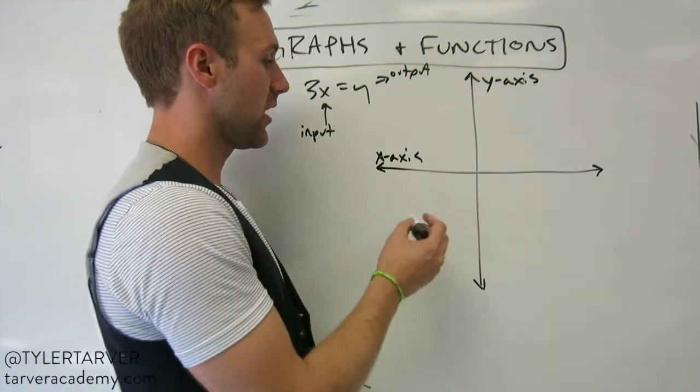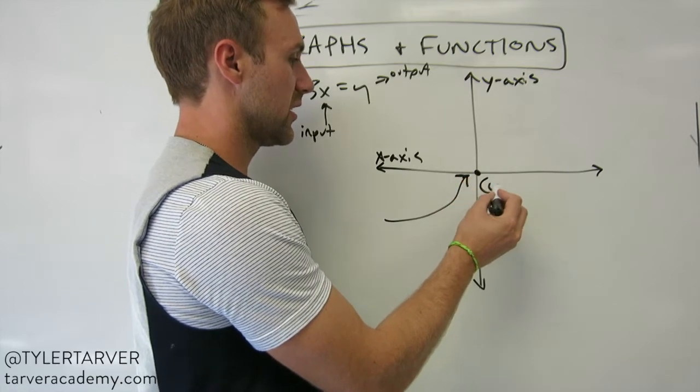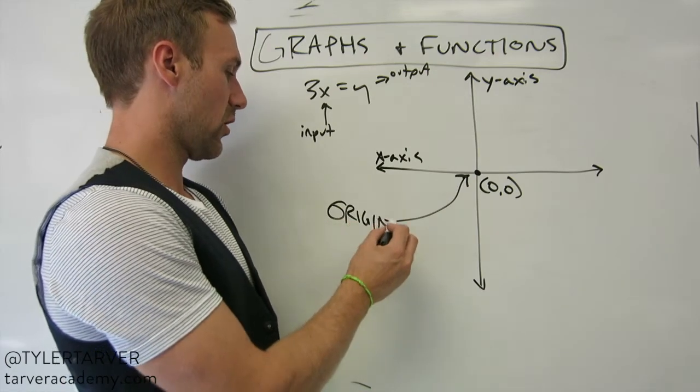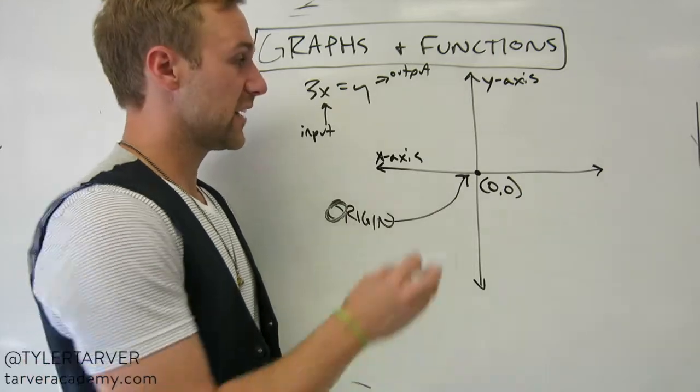Let's say also in a coordinate, that little guy right there, that's at the ordered pair of 0, 0. That is always called your origin. I don't know why I wrote it like grunge, but origin. That's your starting point.